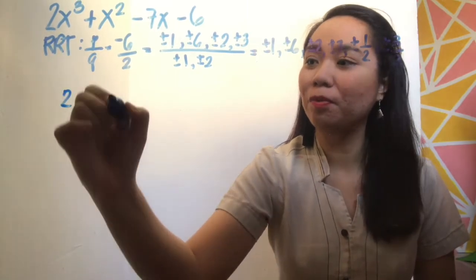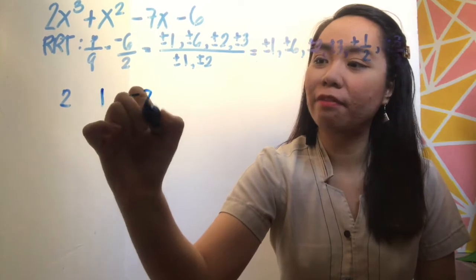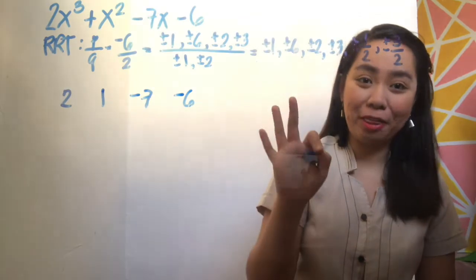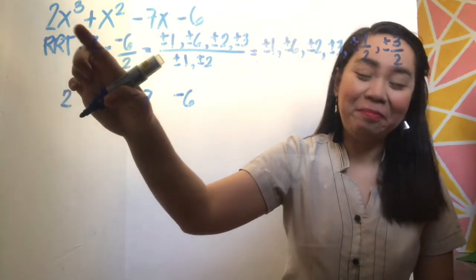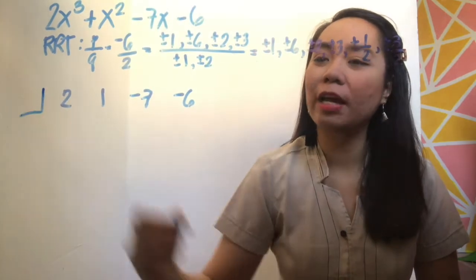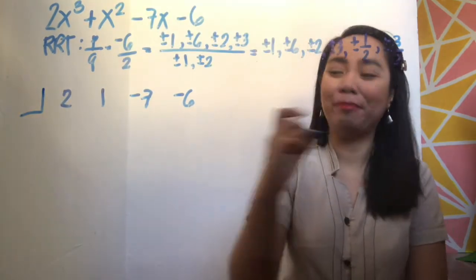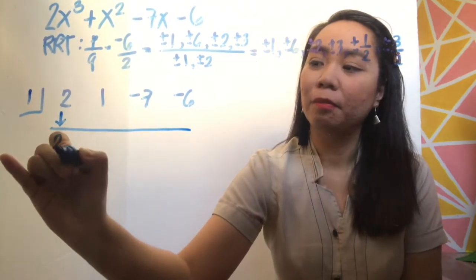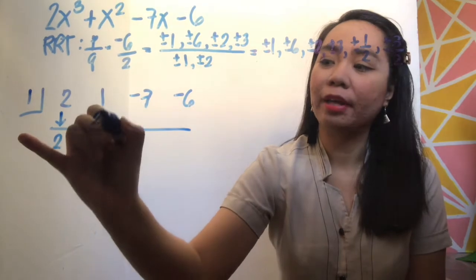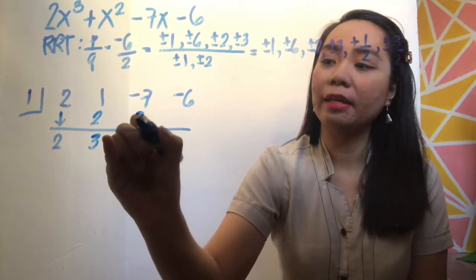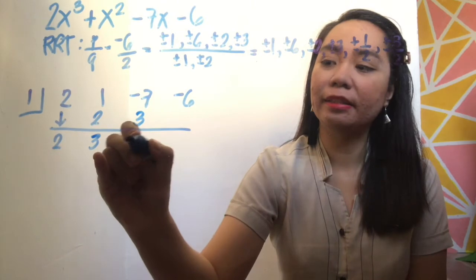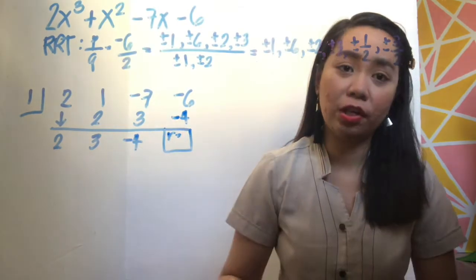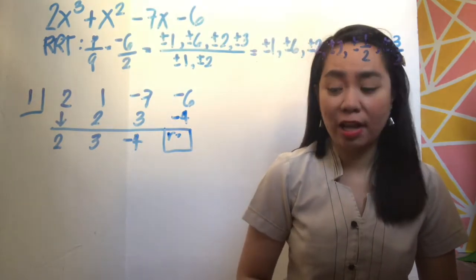Write down the coefficients: 2, 1, negative 7, negative 6. You can try any of these numbers. Remember there can only be three answers because the highest exponent is 3. Let's try positive 1: bring down, multiply, add, multiply, add, multiply, add. As you can see, the remainder is not 0, therefore 1 is not the correct answer.